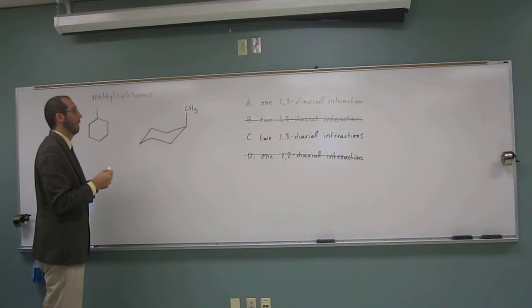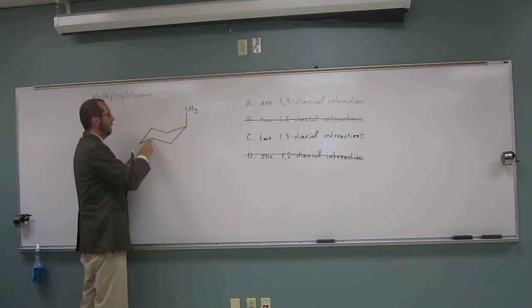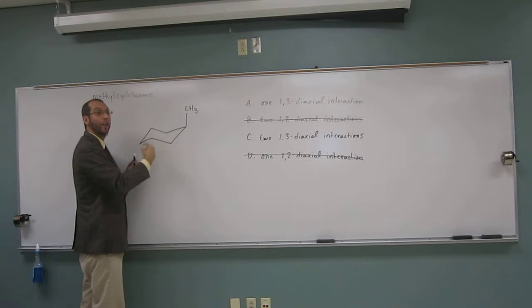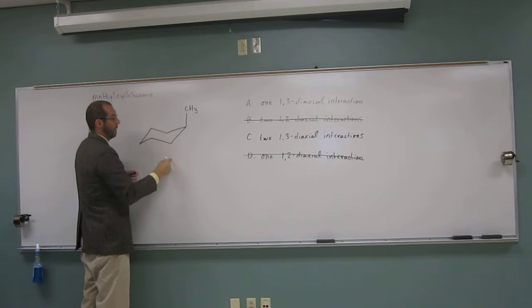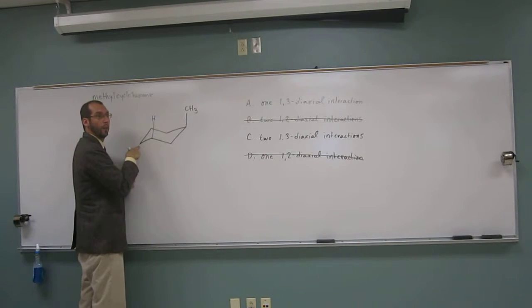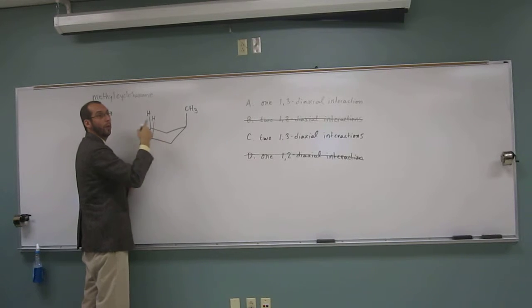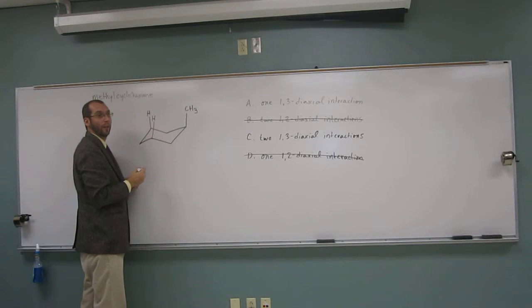There's only 1,3s. Now we look over here, and how many diaxial interactions is it going to have? How many other axial groups are there that this thing could interact with? Two. This one's going to go down, there's a hydrogen there. And this one's going to go down, this one up, hydrogen there, and this one down. So how many 1,3-diaxial interactions are there? Two. One there, and one there.